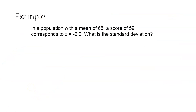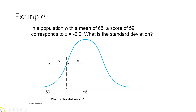Let's walk through another example. In a population with a mean of 65, a score of 59 corresponds to a z of negative 2. What's the standard deviation? If you sketch it out, the distribution has a mean of 65, and 59 has a z-score of negative 2, meaning it's two standard deviations below the mean. The distance between 59 and 65 is six points. If six points is two standard deviations, then one standard deviation must be three points.